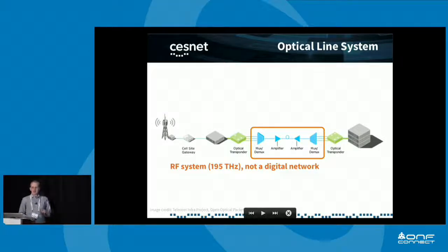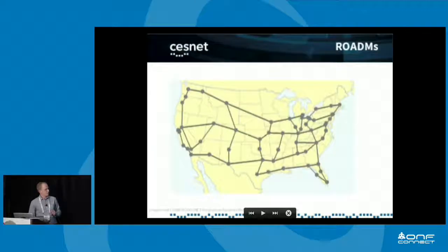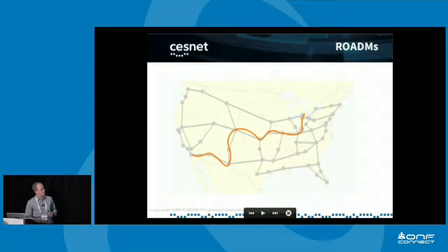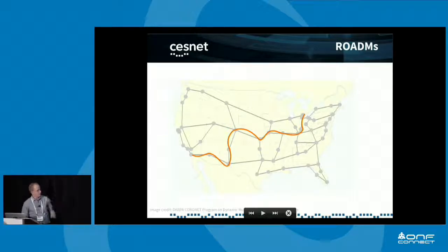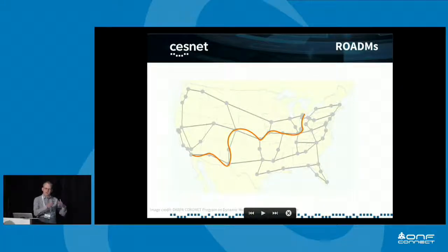One property of this picture is that it shows a linear topology, just from point A to B. A real network tends to look more complex, and if you'd like to establish complex paths you need a device called a ROADM in each of these nodes.